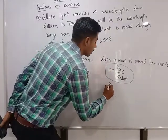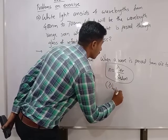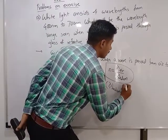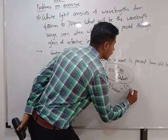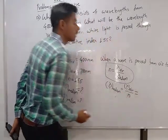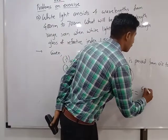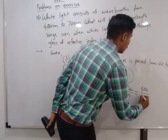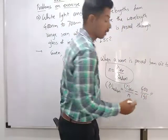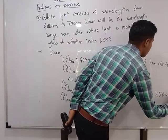We can calculate lambda 1 in medium. The formula gives us: lambda 1 in medium equals lambda 1 in air divided by n, which is 400 divided by 1.55. This gives approximately 258.06 nanometers.